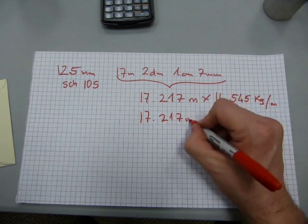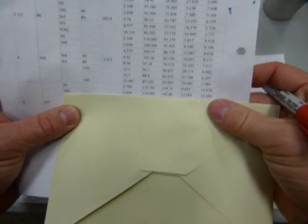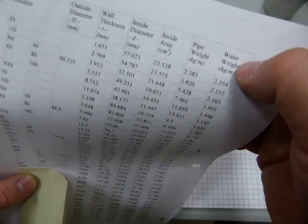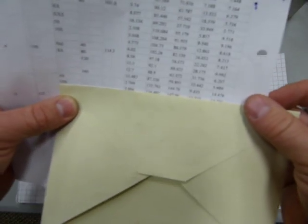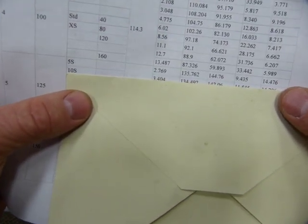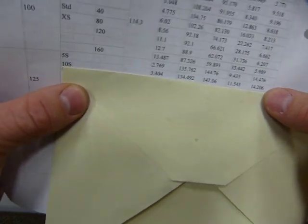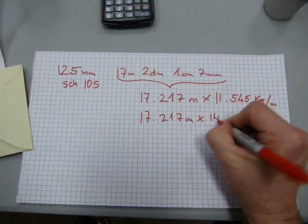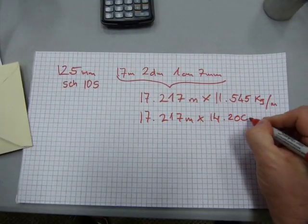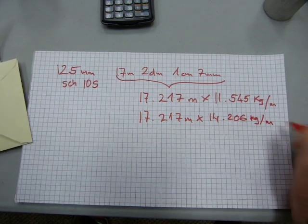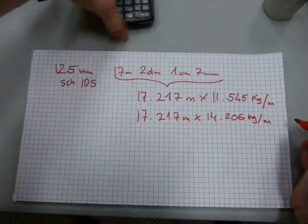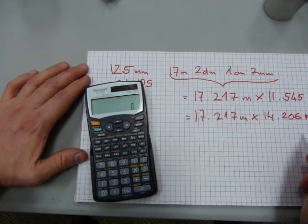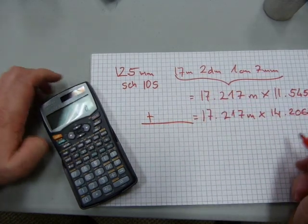And then you have the water in it. The weight of water is here in the next column. And for our schedule 10 pipe, 125 millimeter pipe. There. The water in this pipe weighs 14.206 kilograms. 14.206 kilograms for every meter length. That's what per meter means. What you need is times these two. We're going to have a result for these two. And then we'll just add it all up.